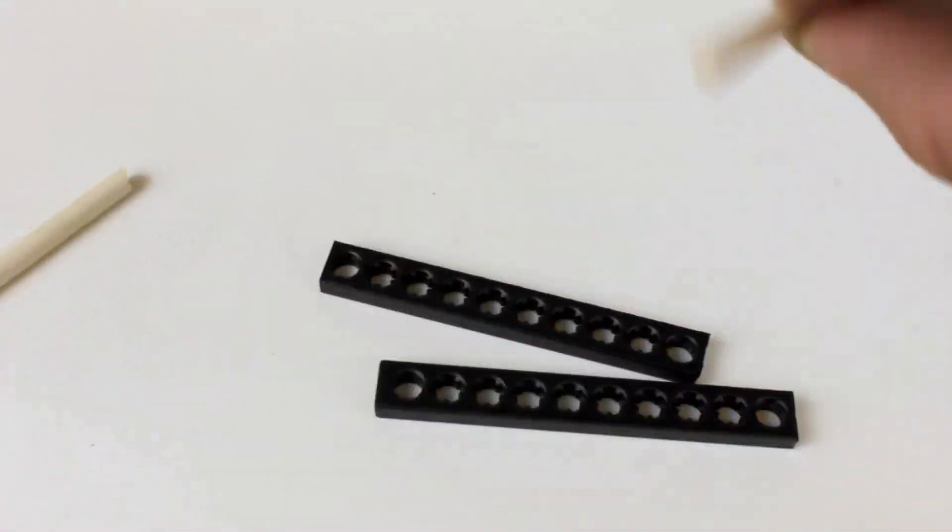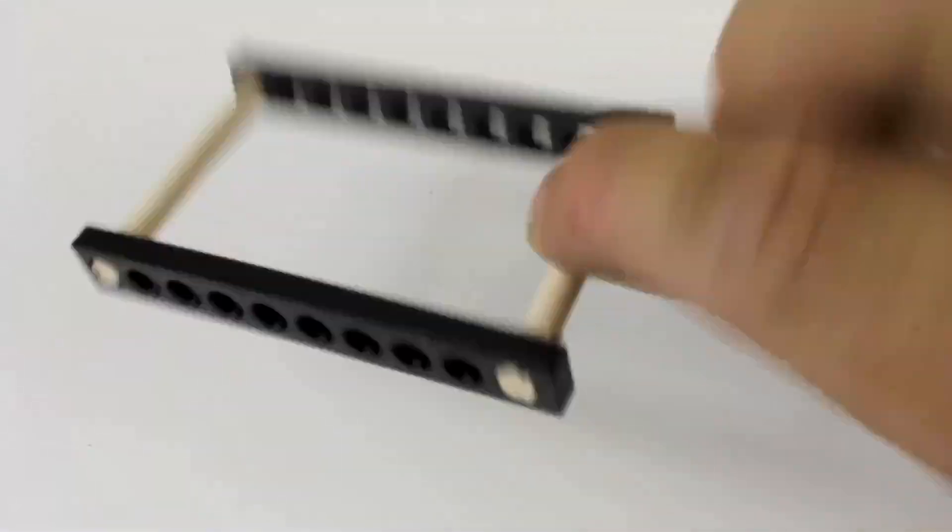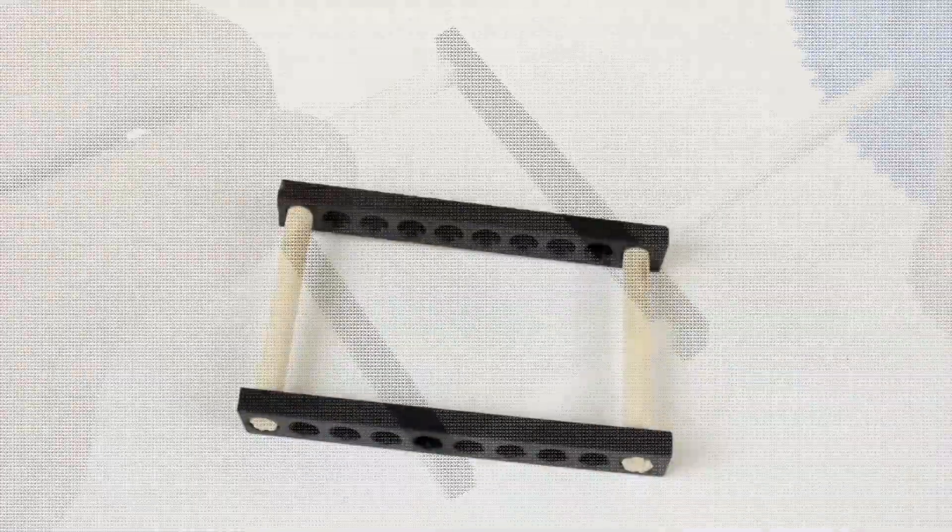Reaming out a hole will make it so it no longer holds a dowel. So don't ream out holes you want dowels to stay pressed into. Only ream out holes you want dowels to slide or rotate in.